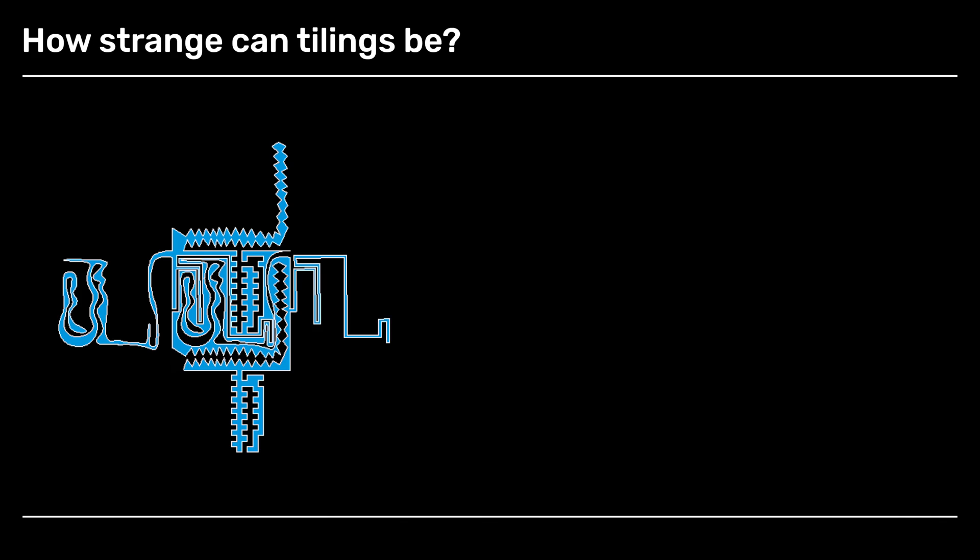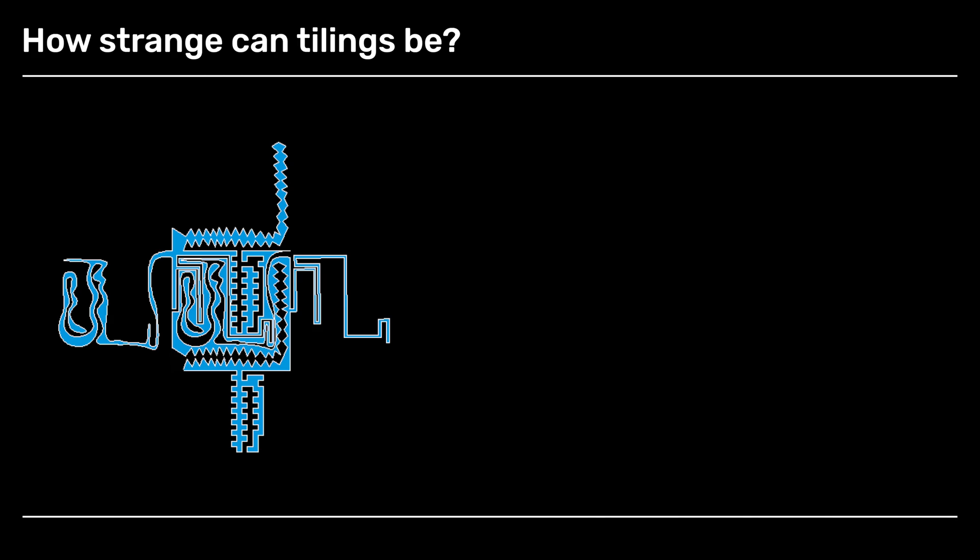But let's ask the question: how strange can tilings be? I want to get across the idea that they can be quite strange. In this next example, which is one that I made, here's a tile. You might look at that and say that can't be a tile, there's no way that could tile the plane. But in fact, it was constructed using a method that I will describe to you in the next module, constructed so that it would generate a tiling. Here is a tiling generated by that particular tile.